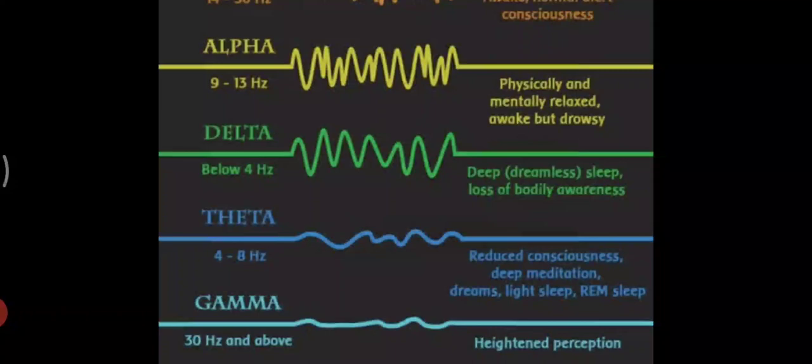Gamma brain waves pass information rapidly and quietly. They are the most stable of the brain wave frequencies. The mind has to be quiet to access gamma. Gamma was dismissed as spare brain noise until researchers discovered it was highly active when in states of universal love, altruism, and the higher virtues.